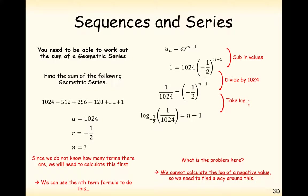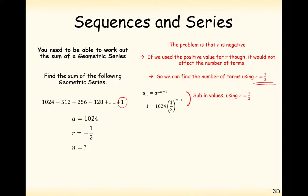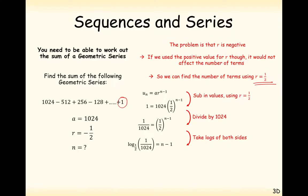We can't use minus a half here because we can't take logs of negatives. So we'll do this problem differently by setting r equal to one half. The sequence we generate will be 1,024, 512, and so on without the alternating signs, but it will give us the position of the value 1 in our sequence. We're not going to use r equals minus a half; we're going to use r equals a half, based on the fact that we can't take the log of a negative value. Rearranging — divide by 1,024, take log base a half, then add one to the other side — we get n equals 11.